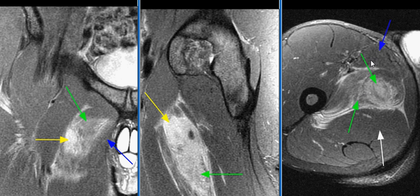The adductor brevis muscle lies between the more anteriorly located adductor longus muscle, as seen on this image with the blue arrow, and the more posteriorly located adductor magnus muscle. MRI findings are consistent with an adductor brevis muscle tear.